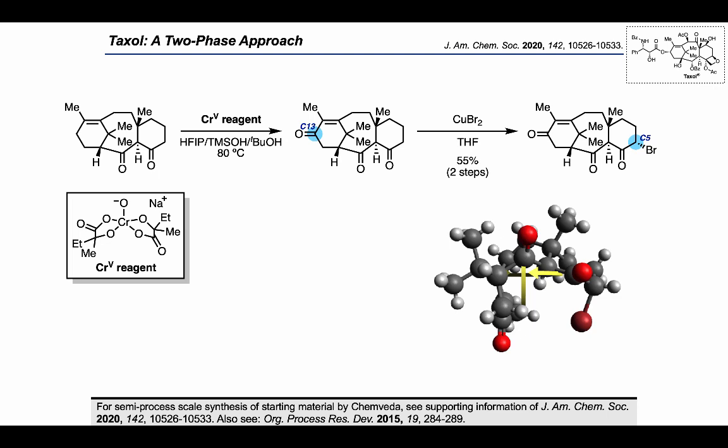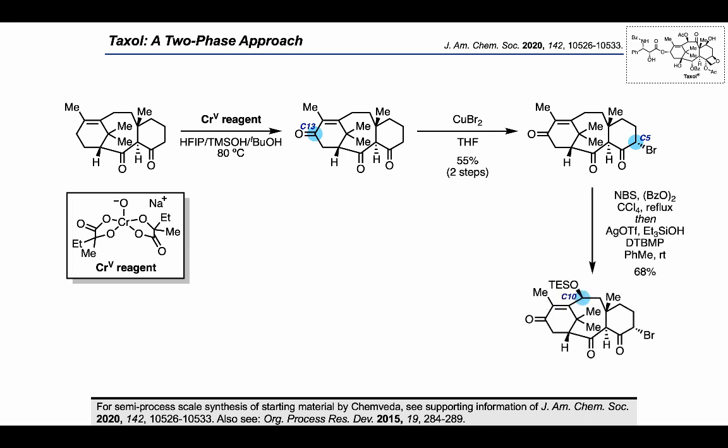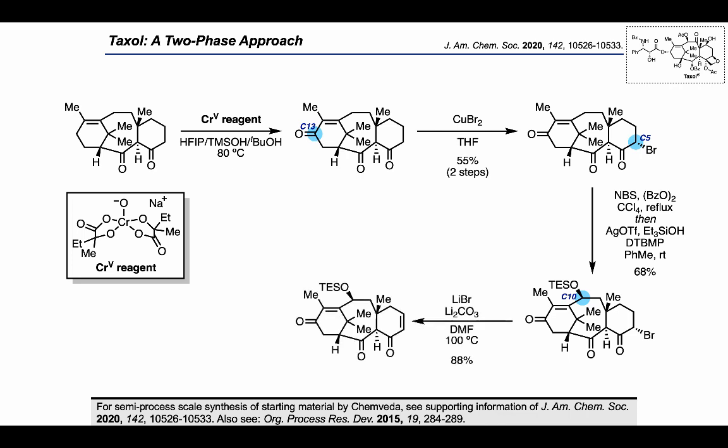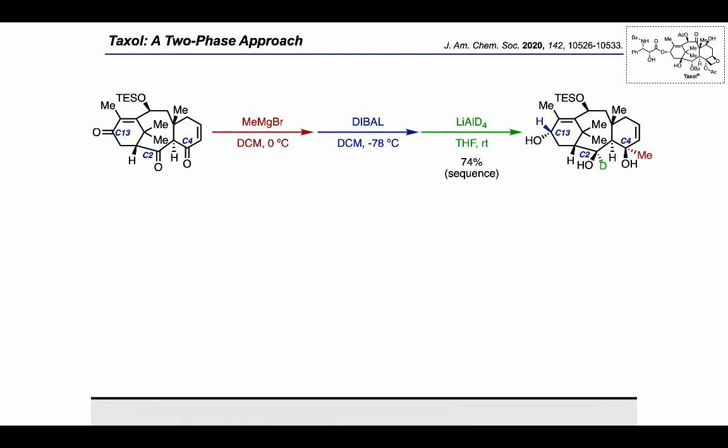C5 oxidation was accomplished using the same strategy as before: initial allylic bromination followed by silver triflate-mediated substitution with a silanol nucleophile. Elimination with lithium bromide and lithium carbonate resulted in formation of an enone from the bromocyclohexanone — the installation of that alkene was very strategic, as we'll see. The authors treated with methyl magnesium bromide to carry out a Grignard addition at C4, followed by DIBAL to carry out a reduction at C13, followed by a lithium aluminum deuteride reduction at C2 — a sequence that took advantage of the relative order of reactivity of the three ketones present in the substrate.